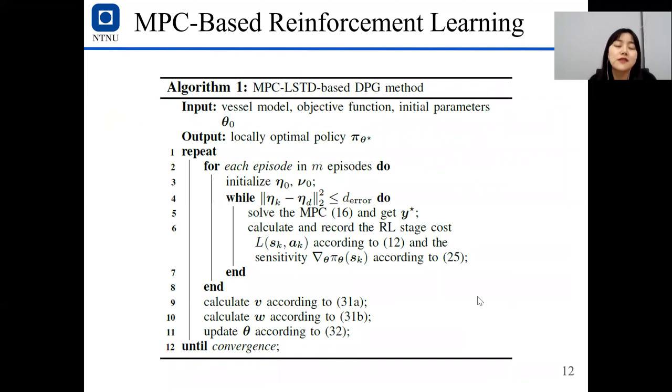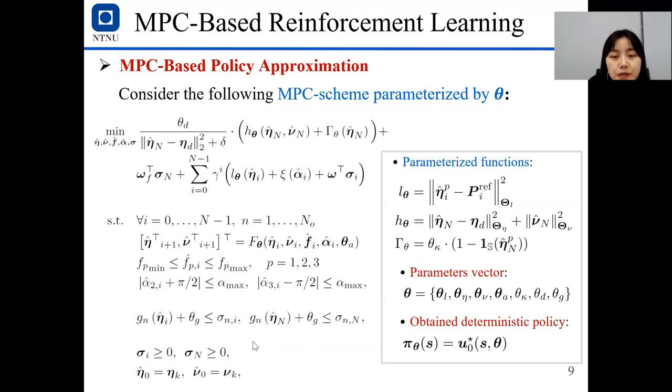Okay, this is our MPC-based LSTD-based DPG method. So as you can see here, we calculate V and W, and then update the thetas until it converges. And then the MPC scheme here delivers the optimum policy. It means the solution to the MPC scheme, u_0 star, is the optimum policy.